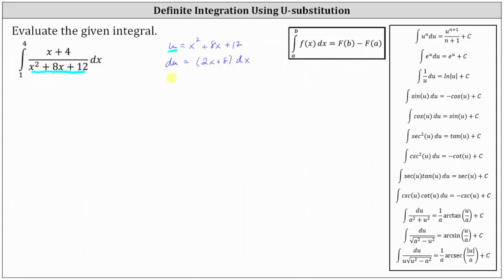This gives us du equals 2 times the quantity x plus 4 times dx. And next, we'll divide both sides by 2,